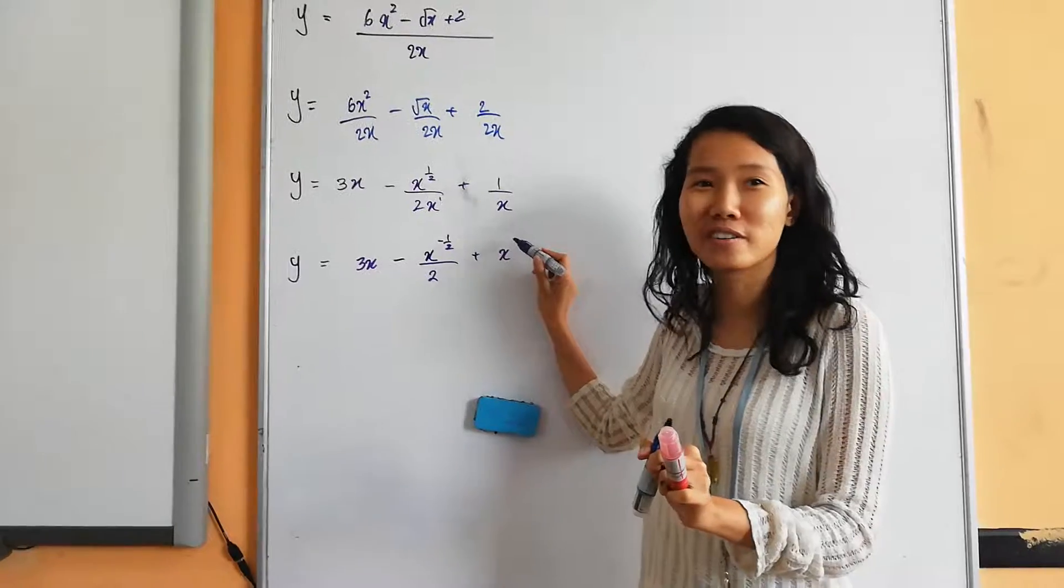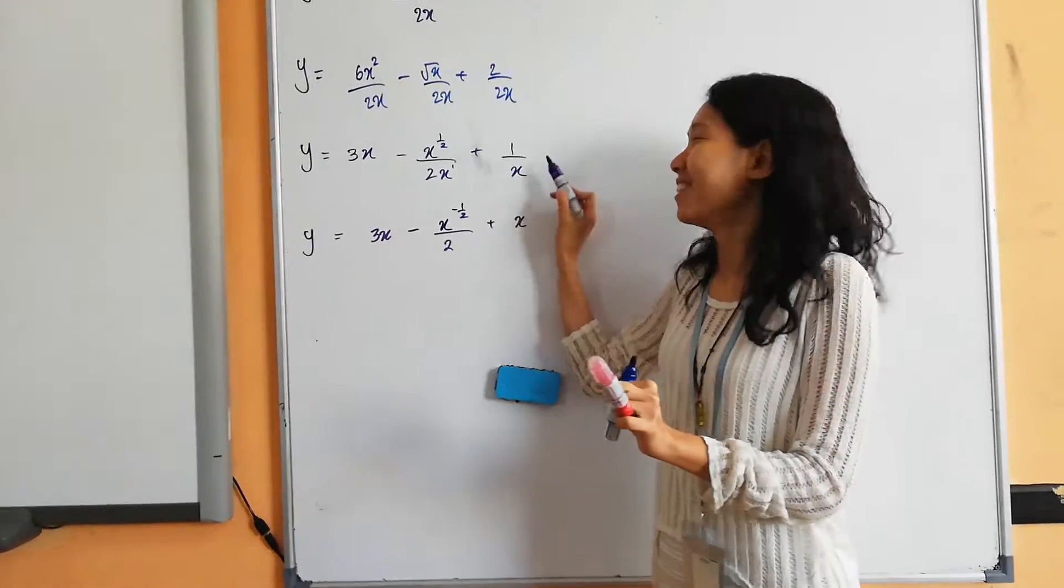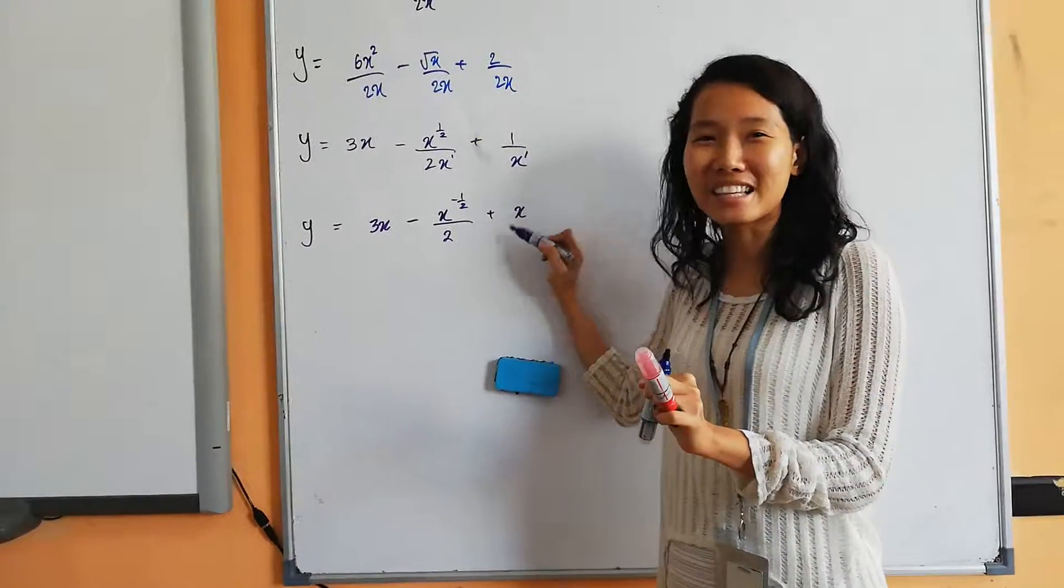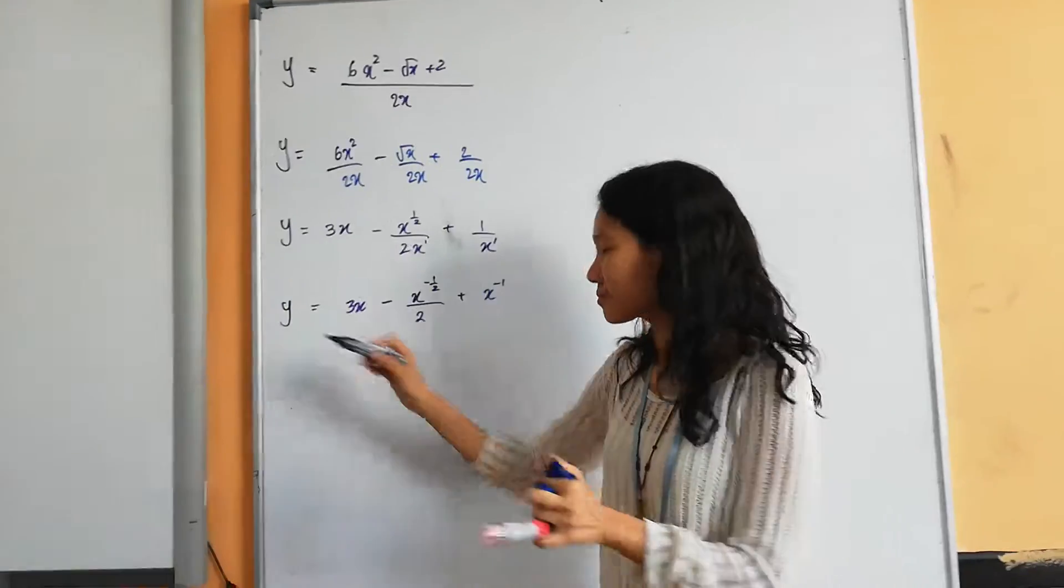Go up, x to the power of? Negative 2 over 2. No. 1. The power is only 1, darling. So, go up. Negative 1 over. Yes. Yeah. Congratulations.